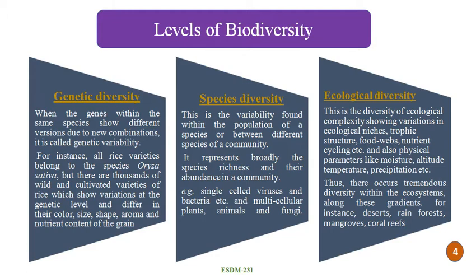The second level is species diversity. This is the variability found within the population of species — here the variability is present between different species of the community. It represents broadly the species richness and their abundance in the community. This means which species have fewer numbers, for example single-celled viruses and bacteria, and multi-cellular plants, animals and fungi. So species diversity means diversity between species.